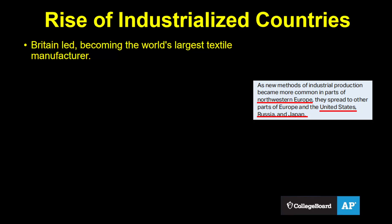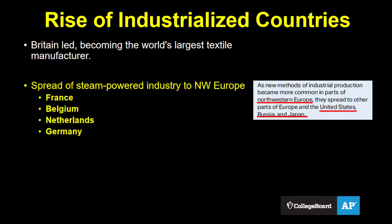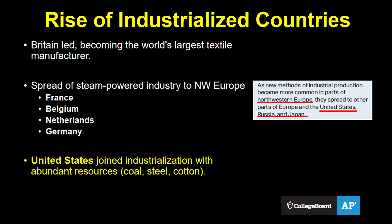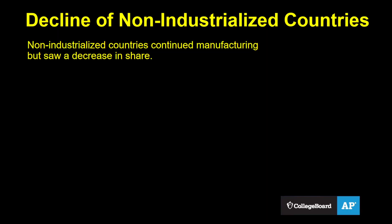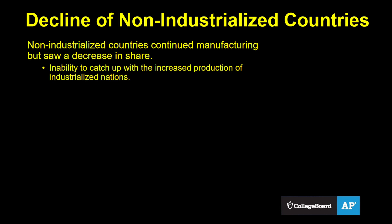Britain took the early lead and became the world's largest manufacturer of textiles. Steam-powered textile production expanded to other countries in northwestern Europe, such as France, Belgium, the Netherlands, and Germany. It also spread to the United States, which had abundant natural resources, including the coal and iron necessary for industrialization and raw cotton grown on cash crop plantations in the south. Industrialization would spread further to Russia and Japan. Non-industrialized countries did not stop manufacturing products, at least not at first, but their share of production decreased simply because they could not catch up to the increased production of the industrialized countries.